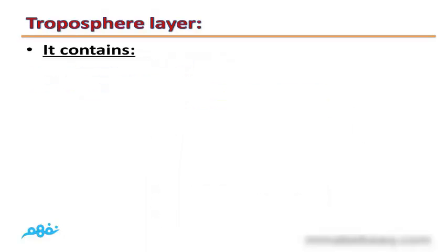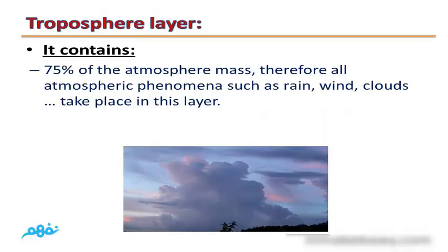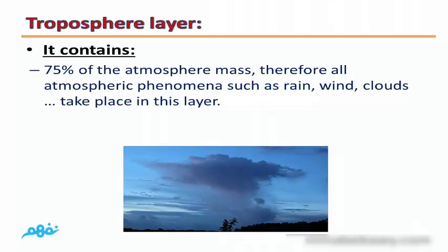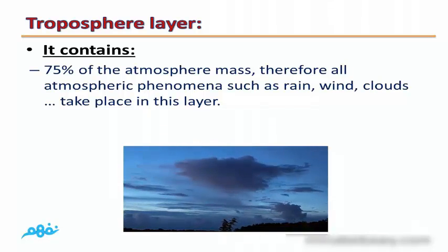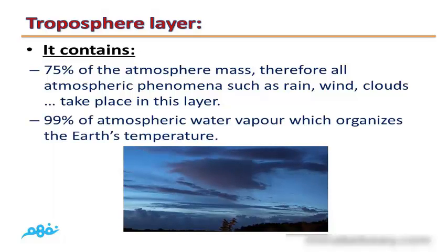The Troposphere contains 75% of the atmosphere's total mass. Therefore, all atmospheric phenomena such as rain, wind, and clouds take place in this layer. It also contains 99% of atmospheric water vapor, which regulates Earth's temperature.